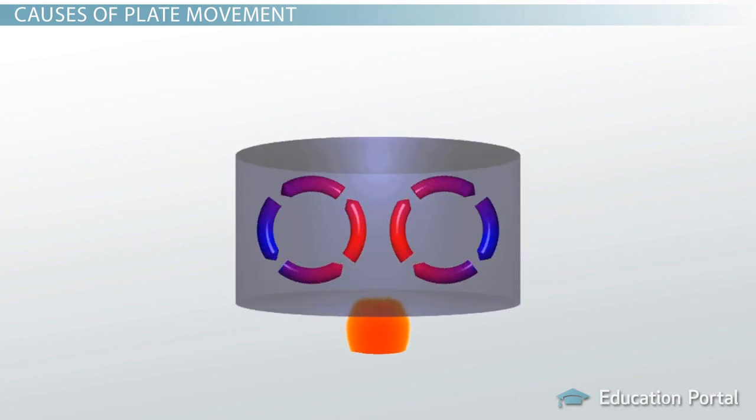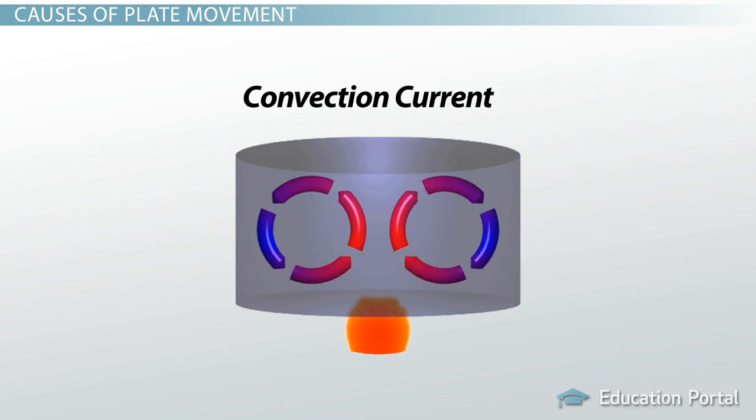When you put a pot of water on the stove to boil, the water nearest the stove heats up faster than the water on the surface of the pot. The hotter water tends to move toward cooler areas, and as it does this, a current of hot water rising and cooler water sinking begins to form. This is known as a convection current.